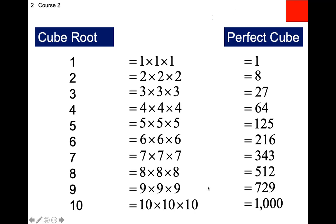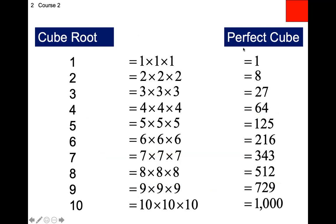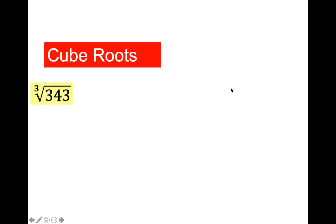So how do you use this table? The same way we used perfect squares. If I take the cube root of a number, I get back to what I started with. If I cube a number, I get to the perfect cube. For example, the cube root of 343: we go to Box 2, find 343, look to the left — the answer is 7. Tonight for homework they'll ask some cube roots; you just need to remember how this works.